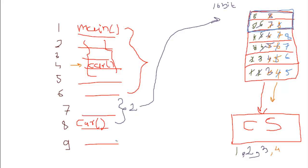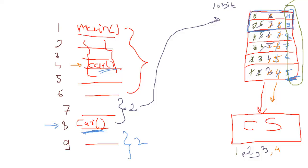The MUP will refill the queue from the eighth instruction — that is, the first instruction of the called function. So in our queue we will now have eight, nine, ten, eleven, twelve, and thirteen — the instructions of the Car function. This is the limitation of pipelining: it fails when there is a function call, because the pre-fetched instructions in the queue become invalid and the entire queue must be discarded and refilled from the correct location.